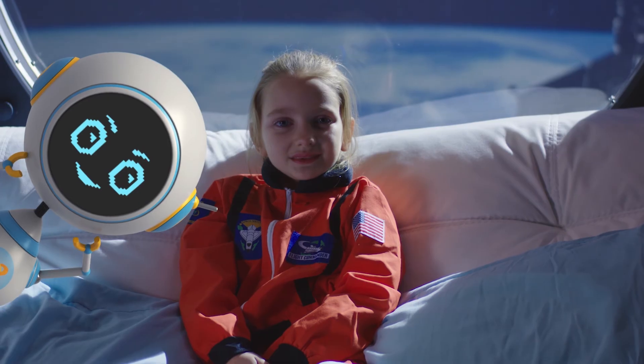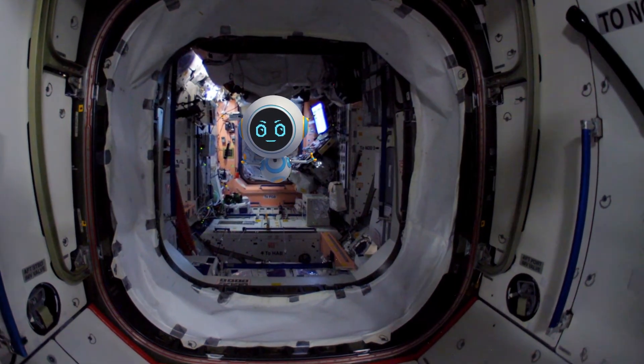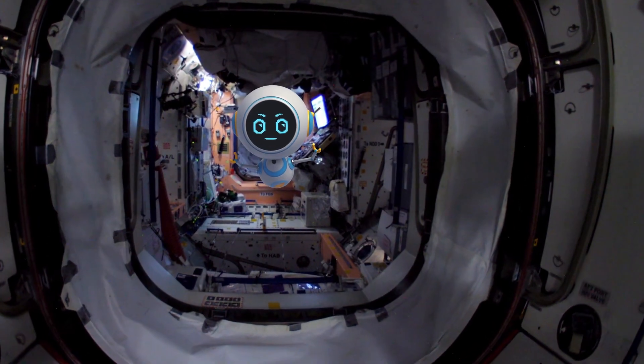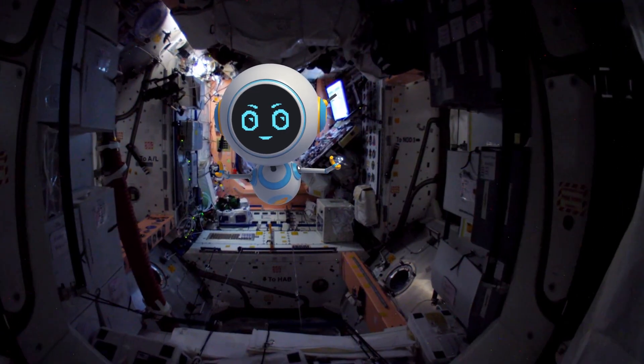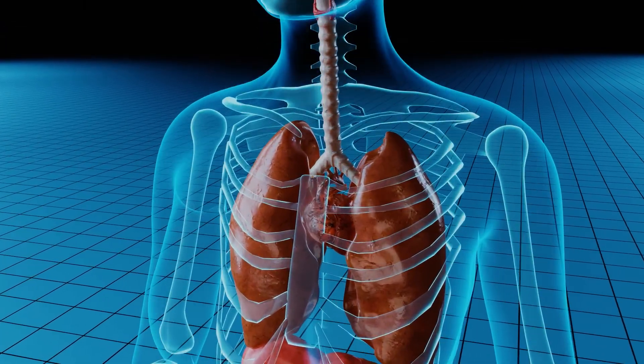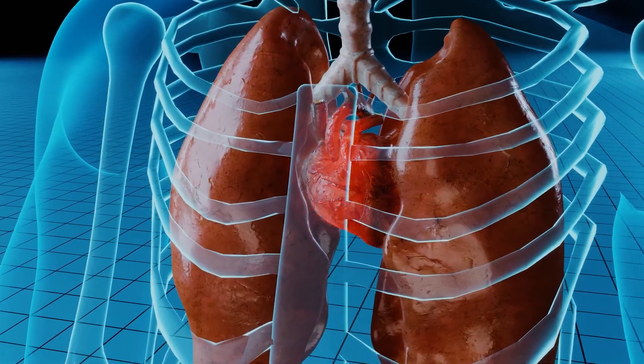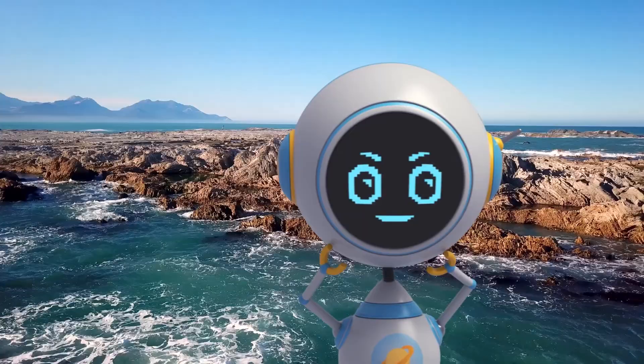This is why astronauts have puffy faces, and having extra blood in the brain makes the body think that there is too much blood. After only a few days in space, the astronauts' bodies make less blood—around 20 percent less—and with less blood to pump, the heart muscle also shrinks. Oh, I made the simulation too big!